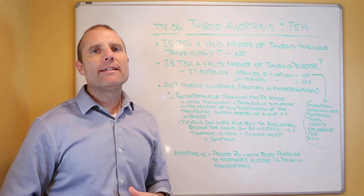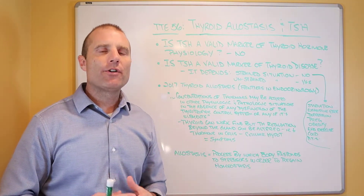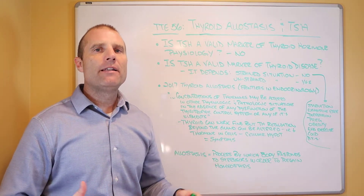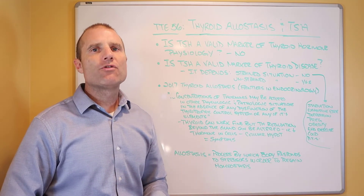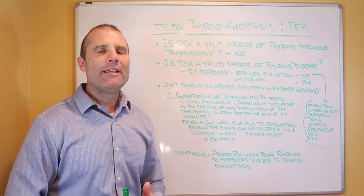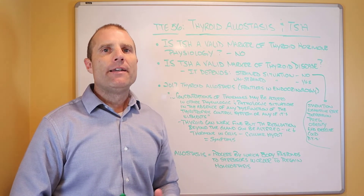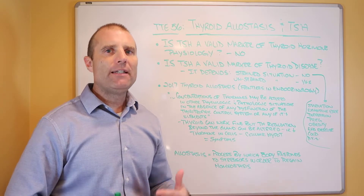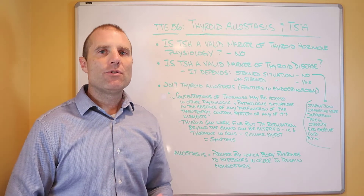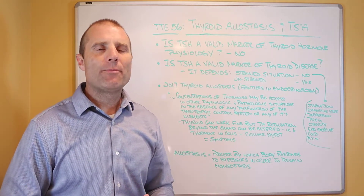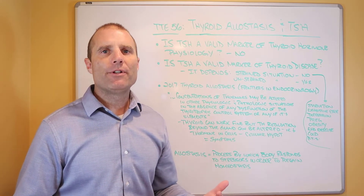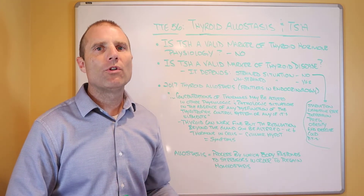I've been beating this drum, but TSH is not a valid marker of thyroid physiology in the body. I talk about cellular hypothyroidism and the fact that lack of thyroid hormone in the cells is really what triggers the symptoms. You can have this cellular hypothyroid state going on even though the gland is working fine. This is why people can have fatigue and all the hypothyroid symptoms, go to their primary care physician or an endocrinologist, and be told that their thyroid gland is fine — that they don't have a hypothyroid condition because their TSH levels are normal or low.